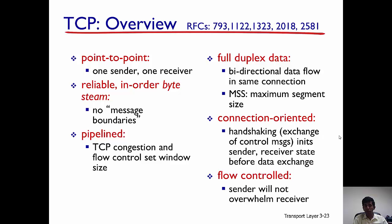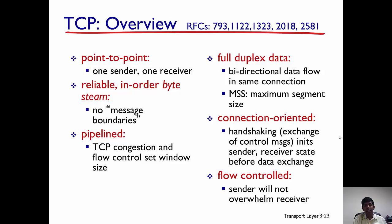TCP ensures that data is transferred reliably between the sender and the receiver. It also makes sure the data is transferred in order, so it ensures a reliable, in-order byte stream at the receiver. It is a pipeline protocol, so TCP has mechanisms to prevent congestion in the network.